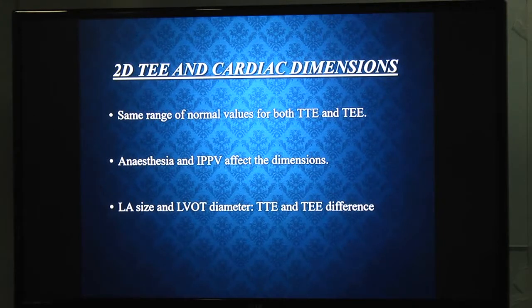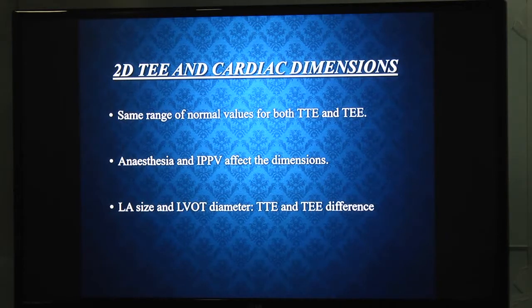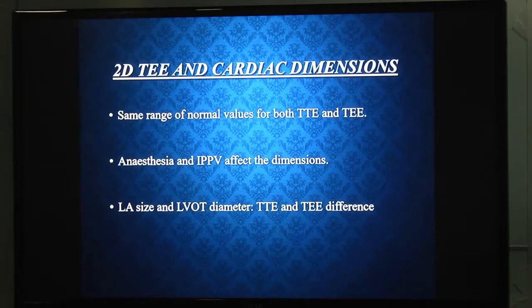For 2D TEE, cardiac dimensions used in reporting are in the same range as recommended in transthoracic echo. Anesthesia and IPPV affect TEE dimensions on the table, and basically LA size and RV diameters are more affected intraoperatively.